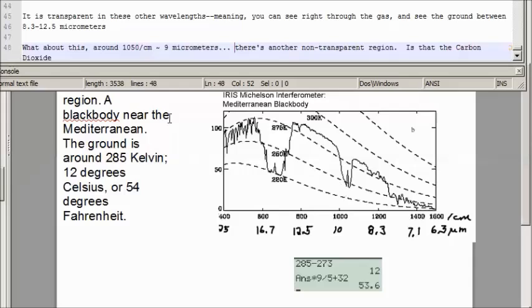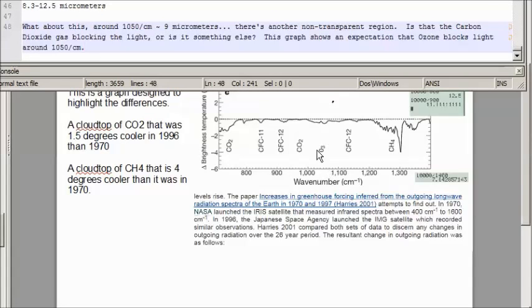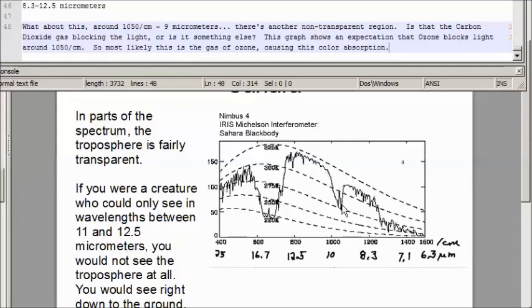What about this? Around 1050 per centimeter, there's another non-transparent region. Is that carbon dioxide gas blocking the light, or is it something else? This graph suggests an expectation that ozone blocks light around 1050 per centimeter. So most likely, this is the gas of ozone causing this absorption.